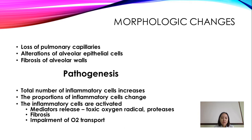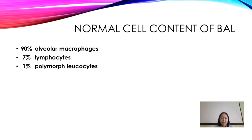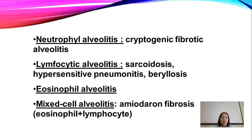Regarding pathogenesis — when we perform bronchoalveolar lavage, you will find alveolar macrophages, lymphocytes, and polymorphonuclear leukocytes. You will also identify neutrophil alveolitis, lymphocytic alveolitis, eosinophil alveolitis, and mixed-cell alveolitis.